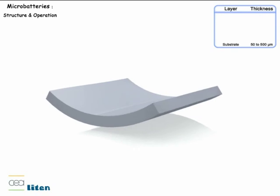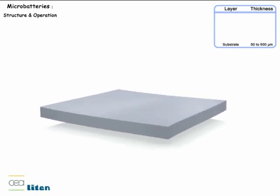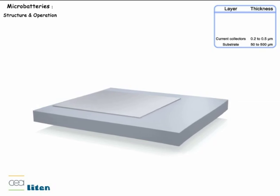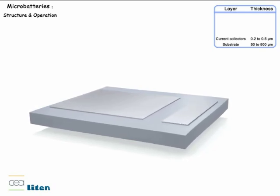The fundamental platform a solid-state battery is built on is a substrate, and in Cymbet's case this is a silicon wafer. A current collector is placed on the substrate first.